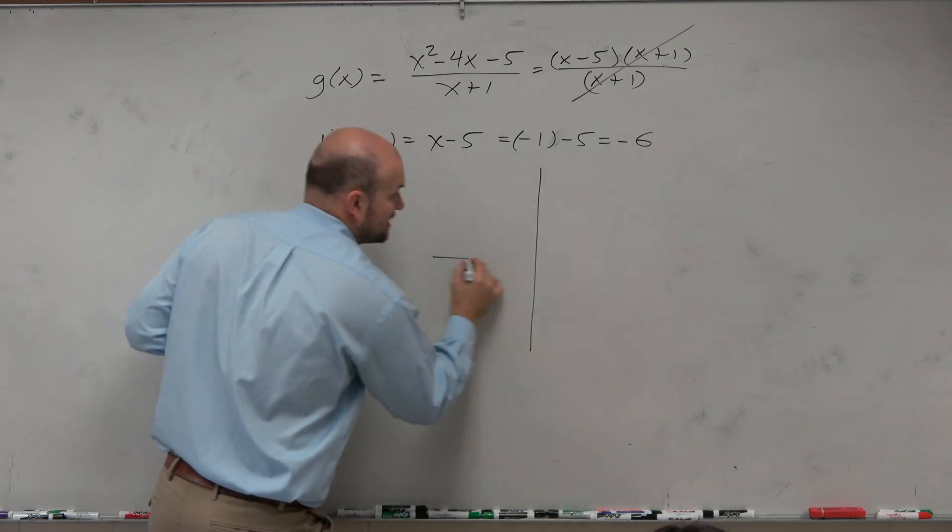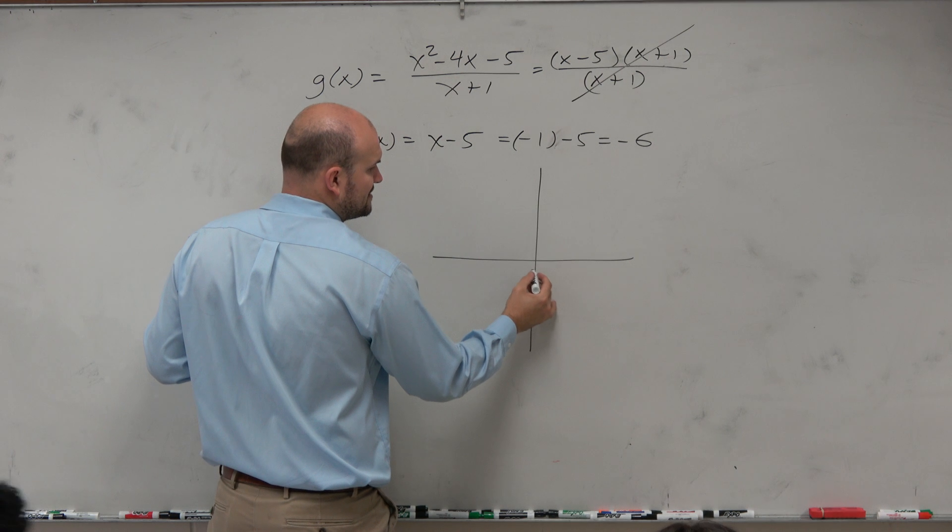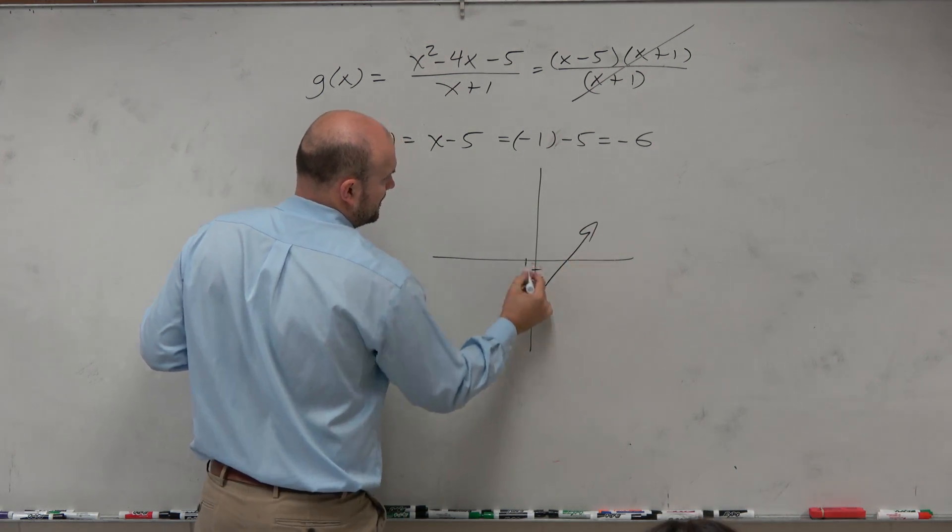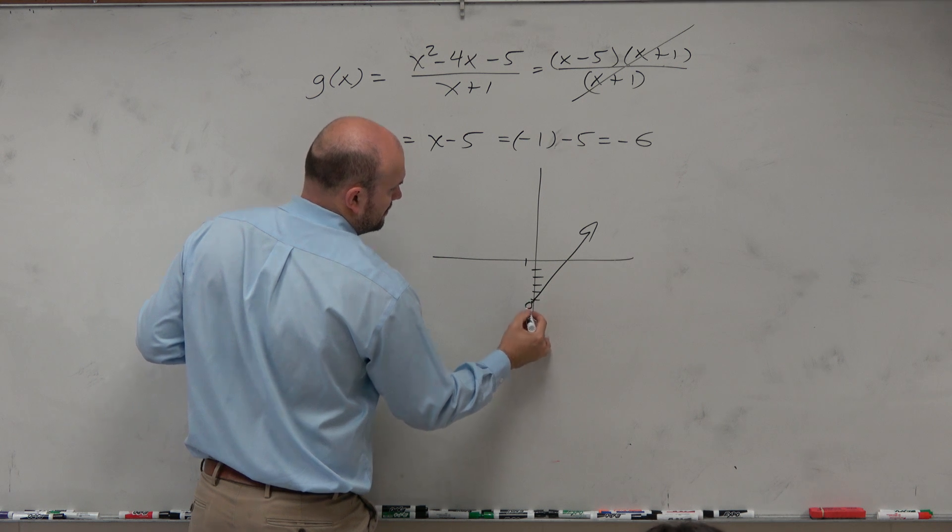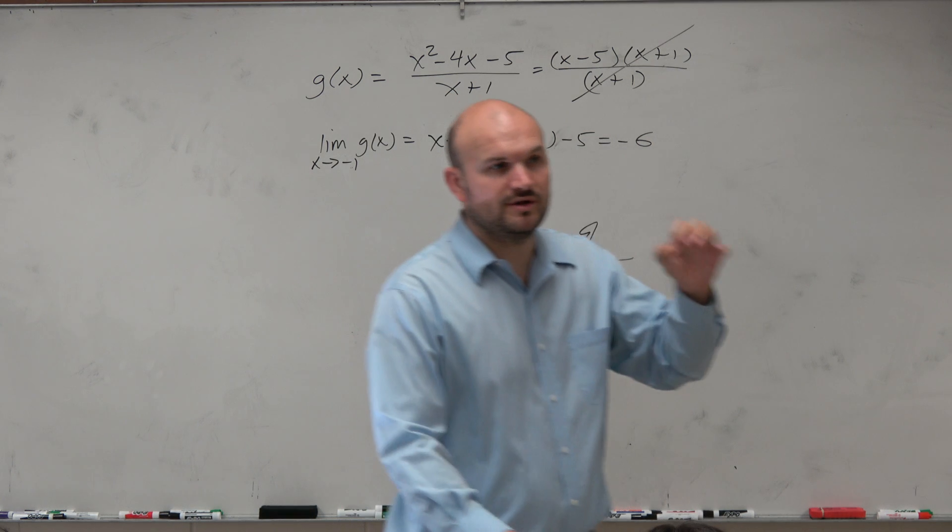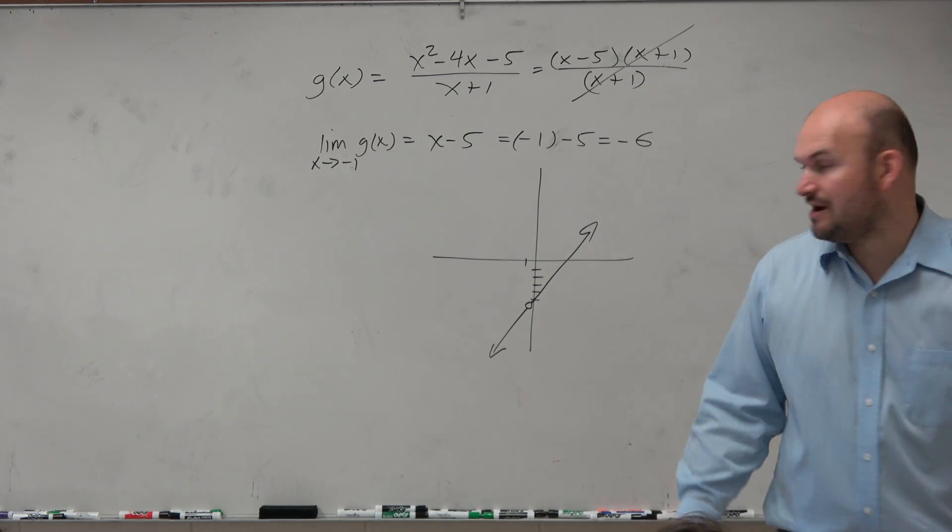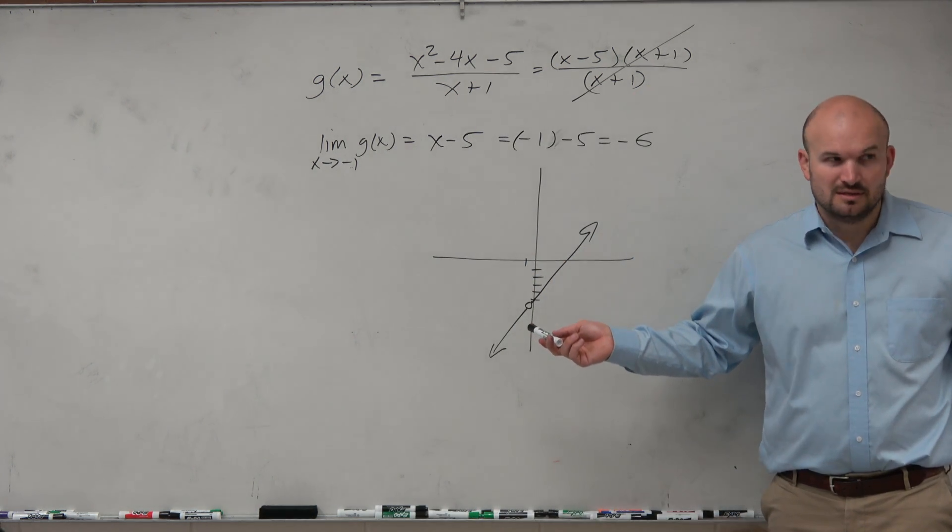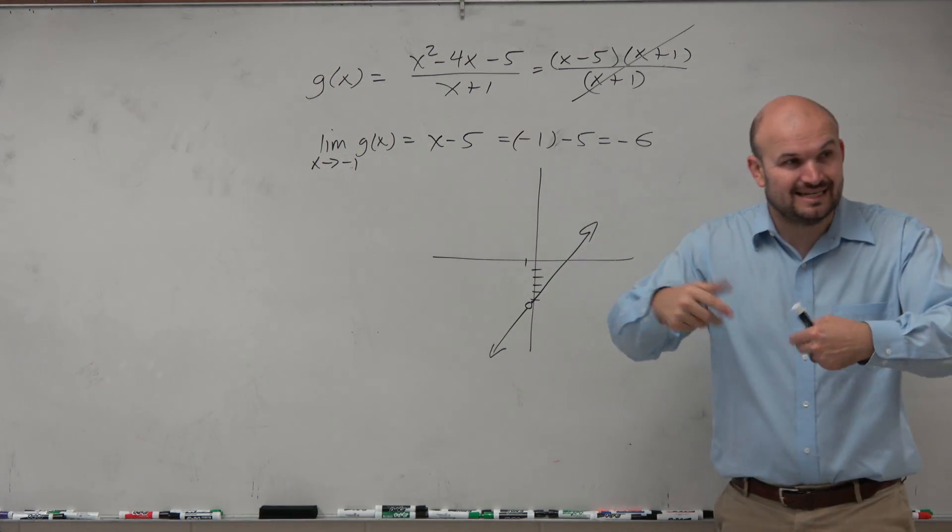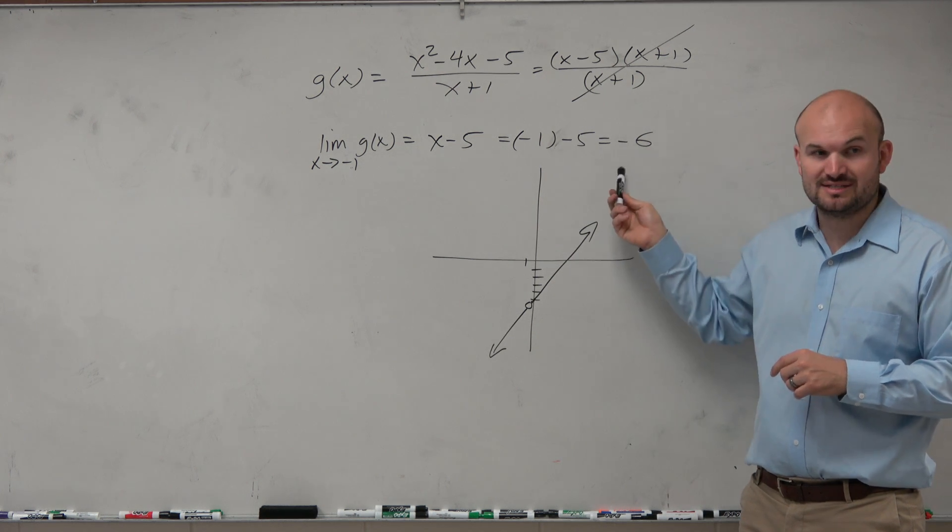Let's look at what the graph looks like. If you had a graphing calculator, your graph would look something like this. But it's important for you to know where the hole exists because does your graphing calculator show you holes? No, it doesn't show holes. It doesn't show asymptotes. So that's why it's very important algebraically for you to know where a hole exists.